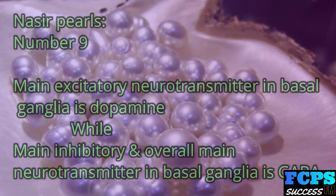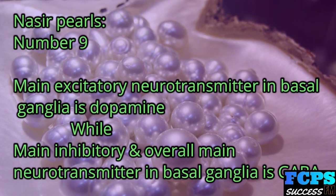Nasir Pearl number 9: The main excitatory neurotransmitter in the basal ganglia is dopamine, while the main inhibitory — and overall main — neurotransmitter in the basal ganglia is GABA.